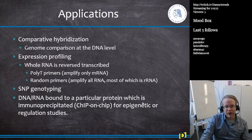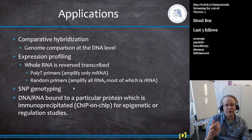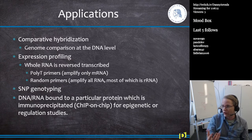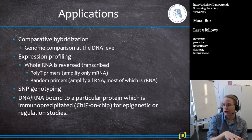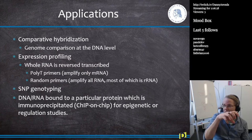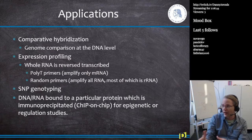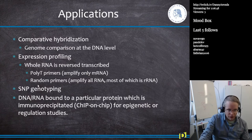Newer is ChIP immunoprecipitation, called ChIP-on-chip, which can be used for epigenetic or regulation studies. What we do is we have DNA or RNA bound to a protein — for example, a DNA-binding protein. We make an antibody against the protein, pull out the protein bound with the DNA, and use only that fraction to look at where this protein was binding in the genome. We can use microarrays for that as well, but we'll focus on expression profiling of messenger RNA.